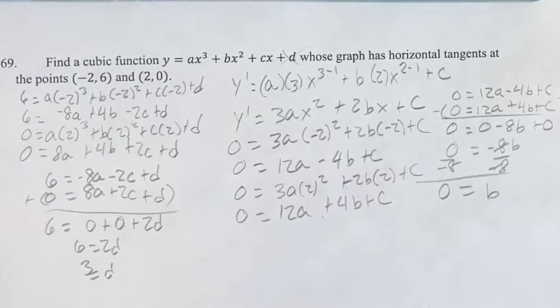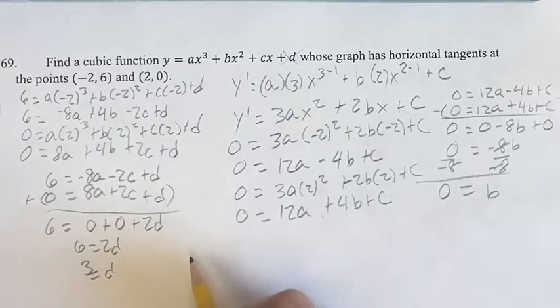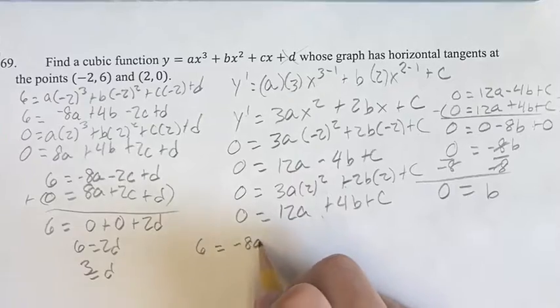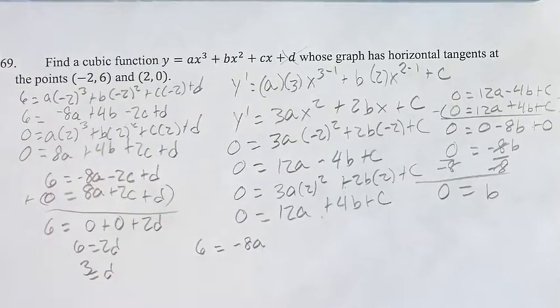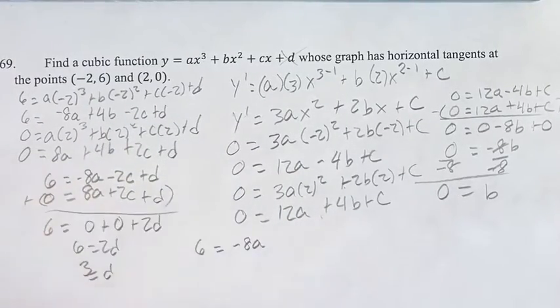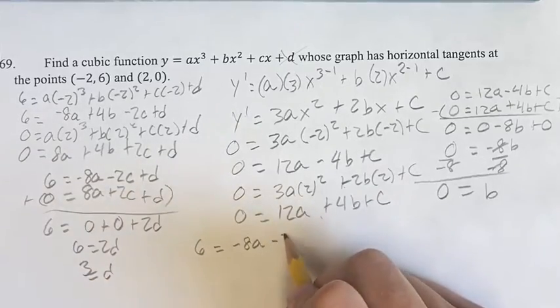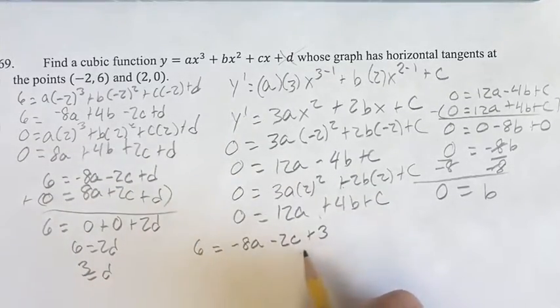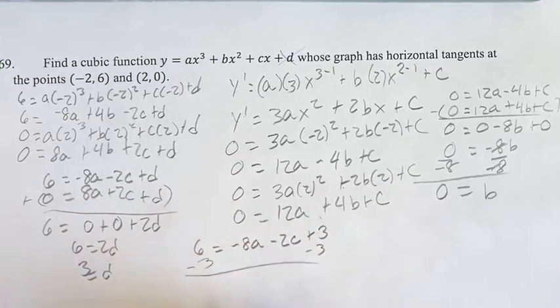If we say that 6 equals negative 8a, which we don't know yet, plus 4b is 0, so just ignore it again. Actually, we could just go off of this equation. Minus 2c plus d would be plus 3. Then if we subtract 3 from both sides, we get 3 equals negative 8a minus 2c.